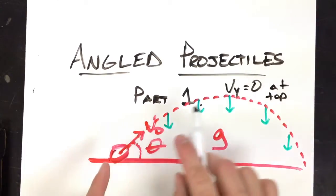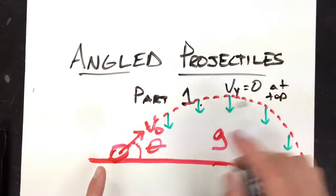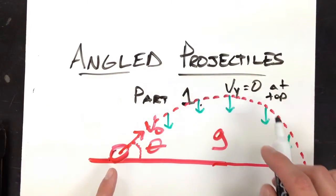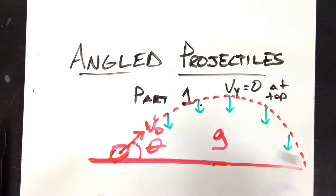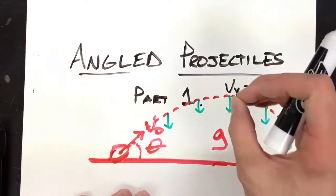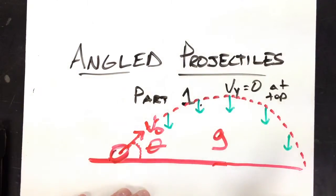Because at the top it changes direction. It was rising, but then it is falling. Anytime you have a change in direction, you must first stop.